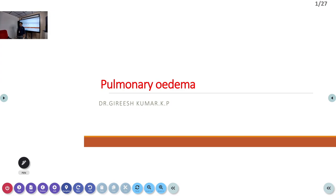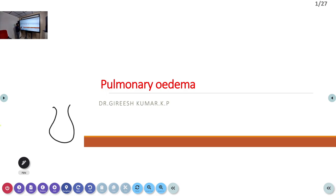Today we will be discussing pulmonary edema. Pulmonary edema is the accumulation of fluid in the alveoli. Normally the alveoli contain air — this is a functional unit of the lung. Normally it contains air so that oxygen can diffuse into your blood. But if it is full of water, air will not come inside — that is pulmonary edema.